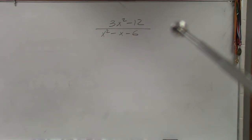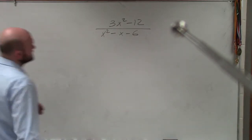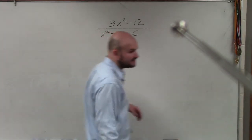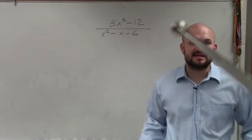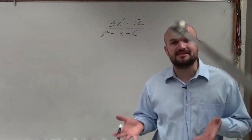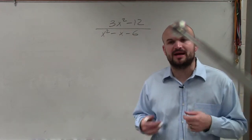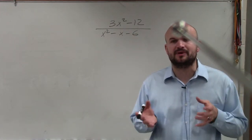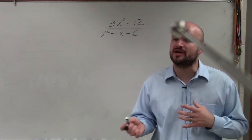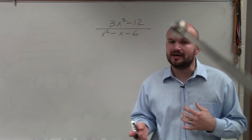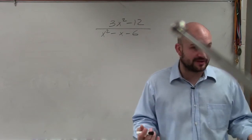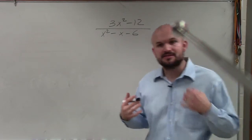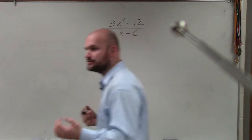The next example, ladies and gentlemen, is (3x² - 12) divided by (x² - x - 6). In this case, what you see is that we have terms that are separated by addition or subtraction. So we can't just go ahead and apply the rules of exponents. And this is the largest mistake that students make.